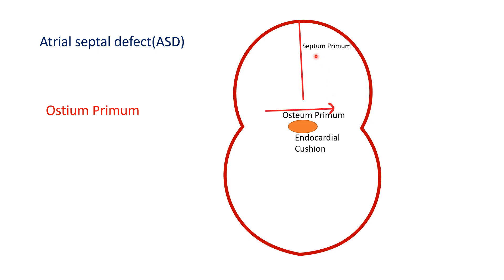Through this ostium primum, blood from the right atria goes to the left atria, as we have seen in fetal development. This can persist after birth also, and so this type of atrial septal defect is called the ostium primum type of septal defect.